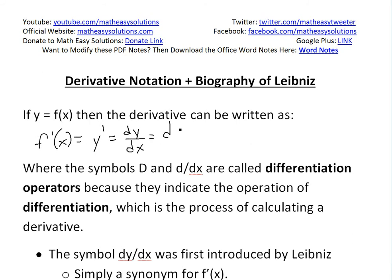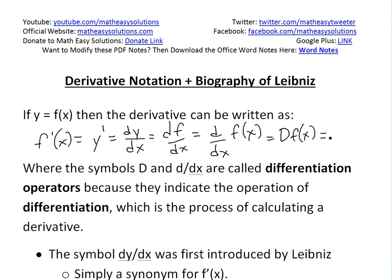You could also write df over dx — the same thing — meaning the derivative of f in terms of x. Or you could write it as d over dx of f of x. Or you could even write it as d and then f of x, putting the big d right there. Or you could even have dx times f of x to indicate the derivative in terms of x. You can leave it out if there's only one variable.